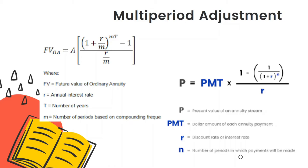The PV and FV formulas can be adjusted for multi-period compounding. For example, if compounding occurs monthly rather than annually, m equals 12. You divide the interest rate per year by 12 and multiply the number of years by 12 to adjust the period count. If quarterly, m equals 4. The variable r or i is the annual interest rate, and t or n is the number of years.